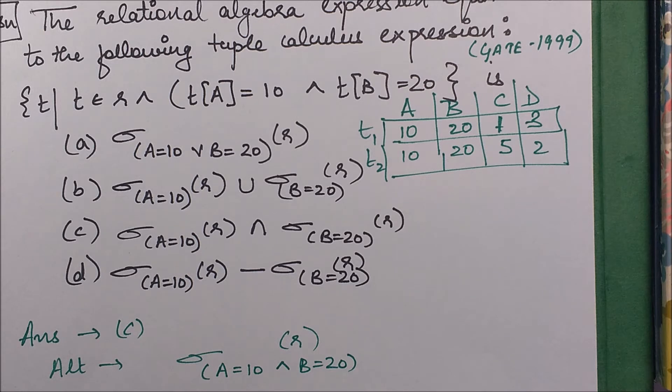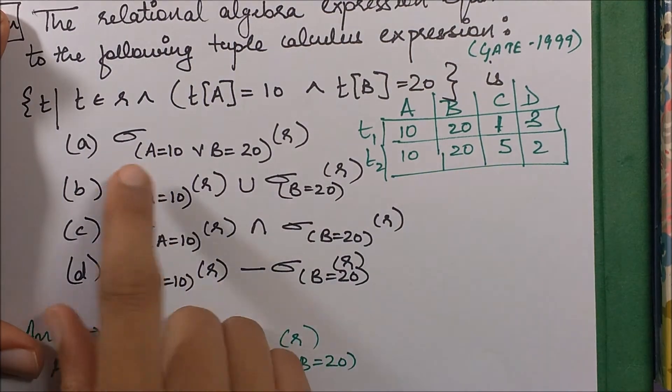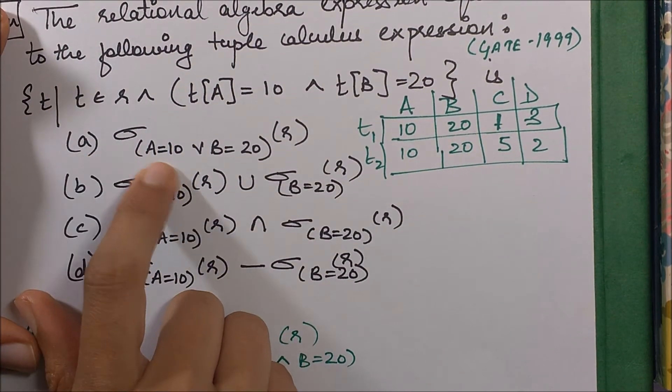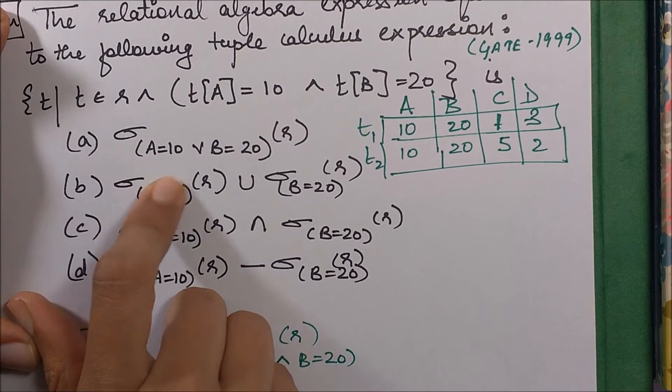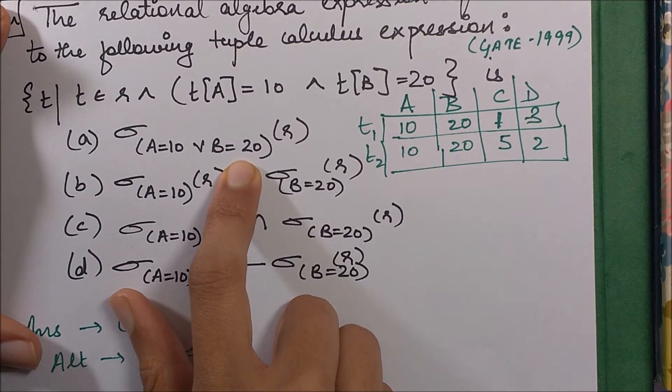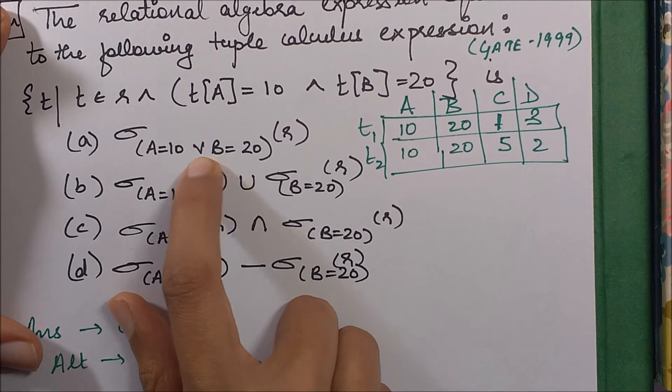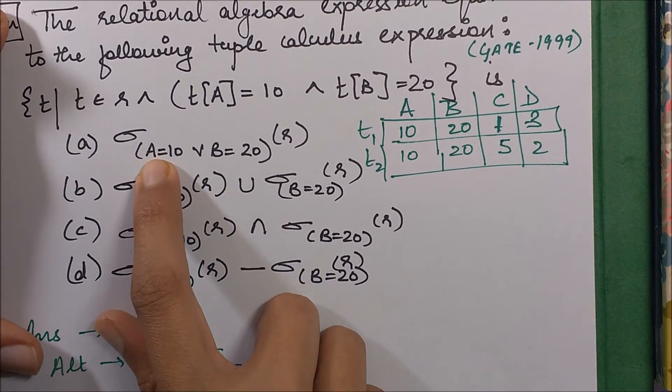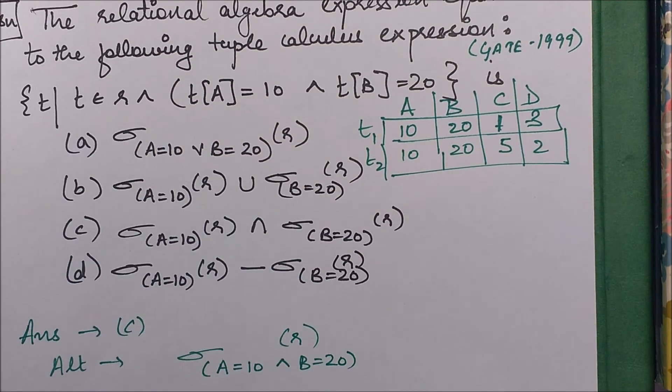Let's see this first. We have: what is this saying? Select all those tuples which have a equals 10 and b equals 20. Now over here we have OR, so that means a can be 10, b can be 20.